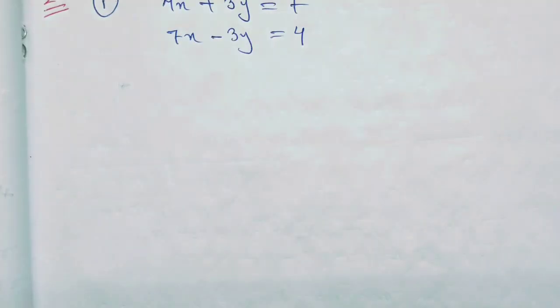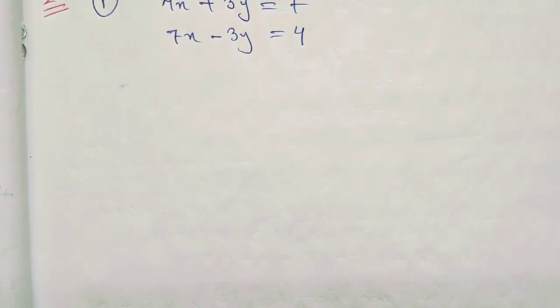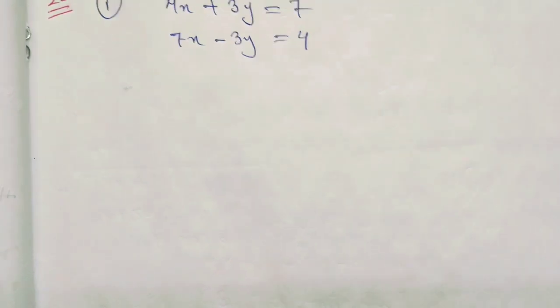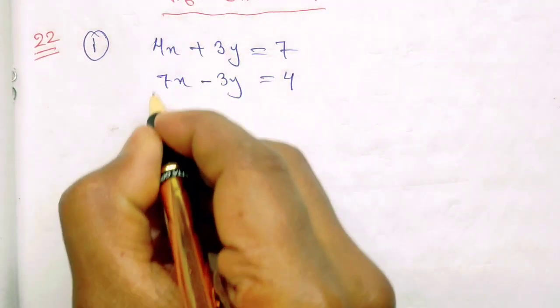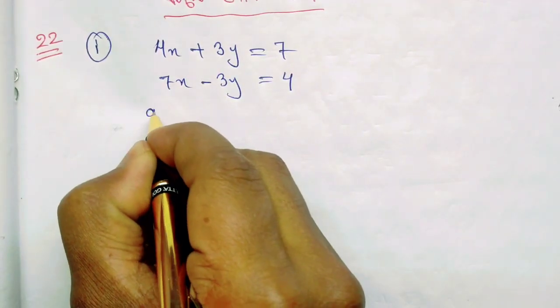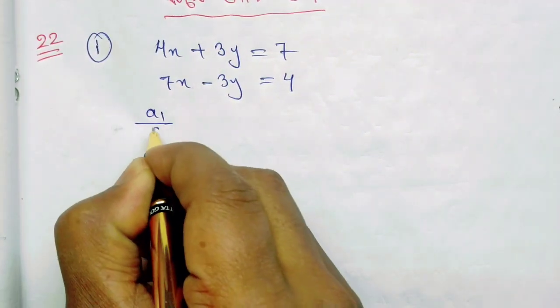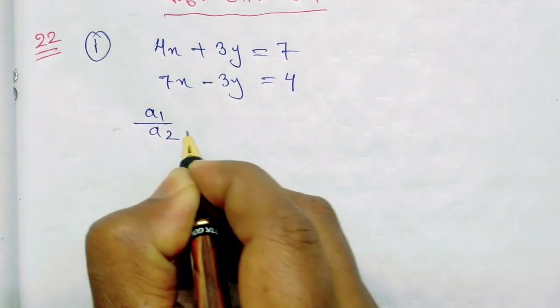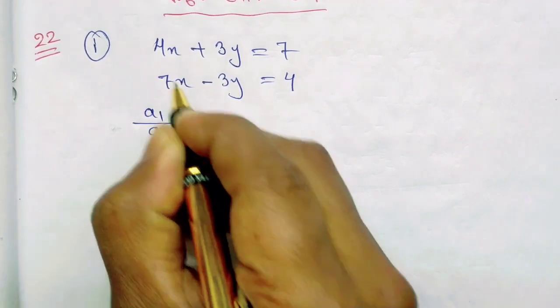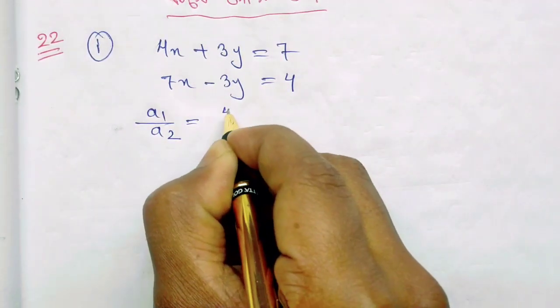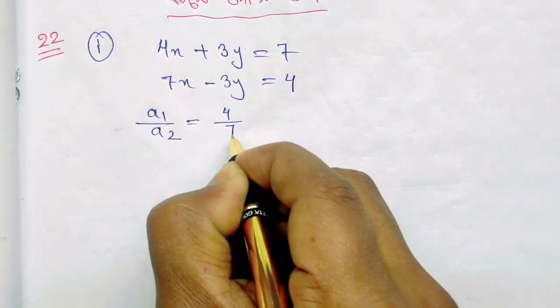So, we can see a1 by a2, not equal to b1 by b2. Here, a1 by a2 equals 4 by 7.